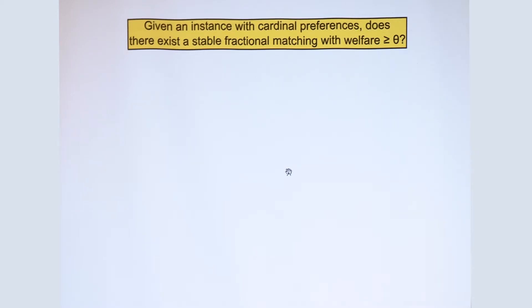Now the complexity of this question depends quite intricately on the valuations. So if the valuations are simple in the sense that the valuations only take the value 0 or 1, they are binary, or you can think of them as like or dislike preferences, then there is a polynomial time algorithm for computing an optimal stable fractional matching.